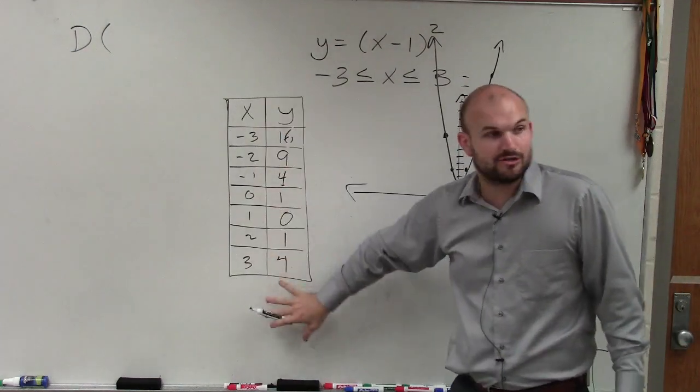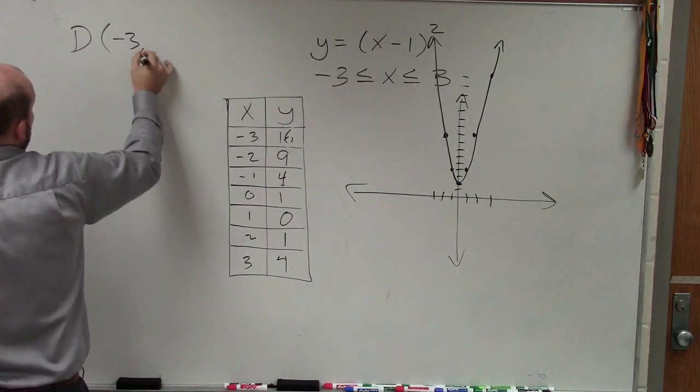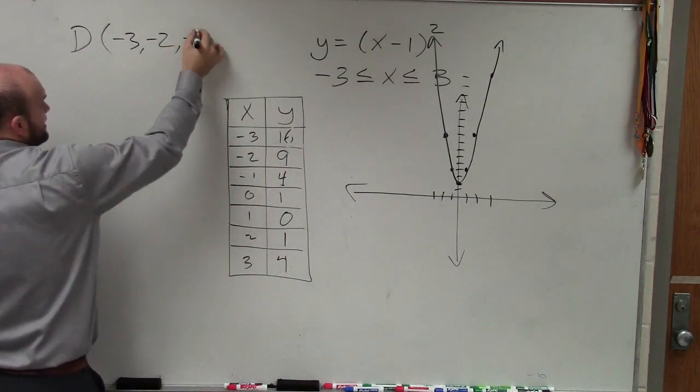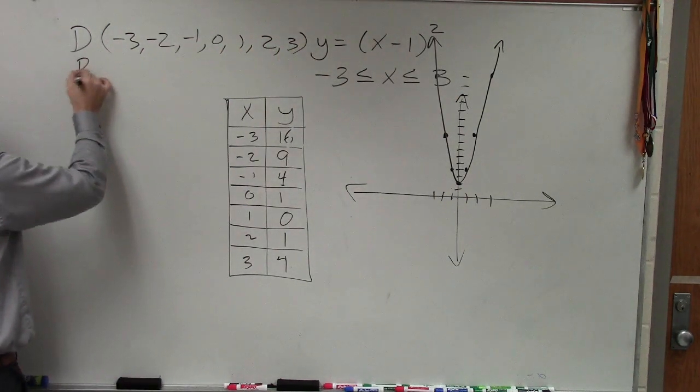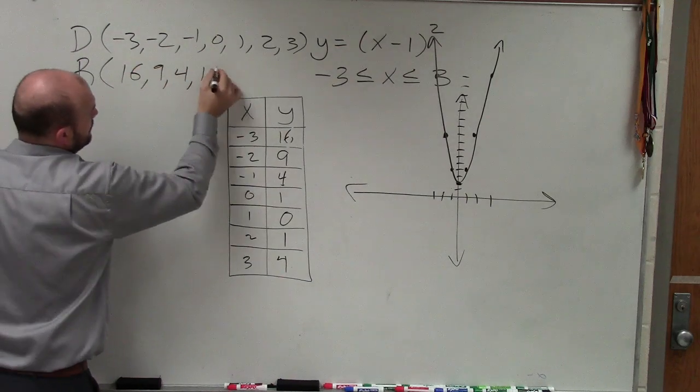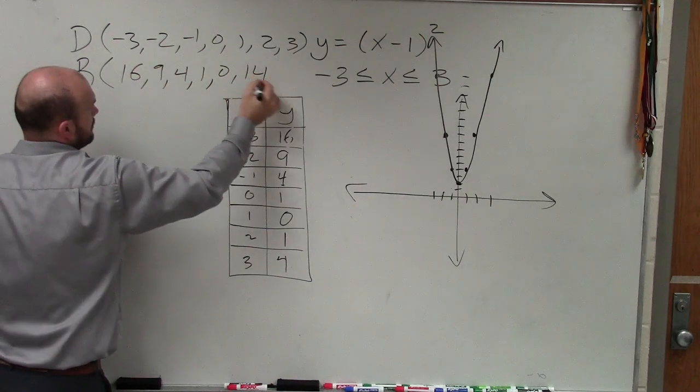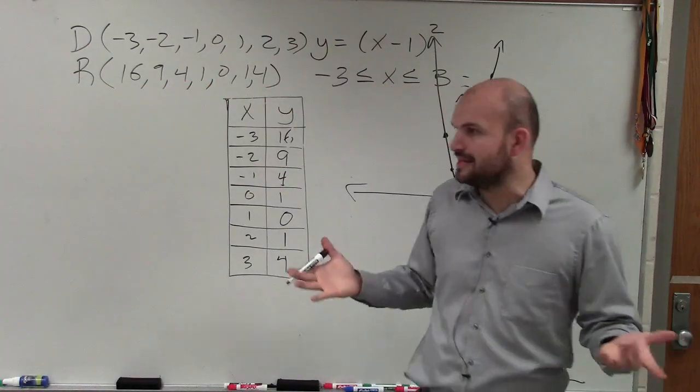So if I'm looking at the domain of a table, you're simply just going to list the x values that you have. It's pretty easy. Range is just going to be the output values. Most people understand from a table. That's not really that difficult.